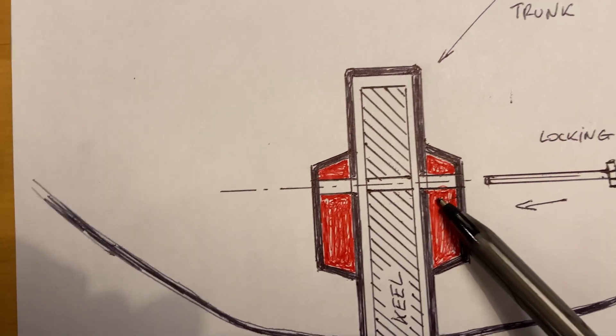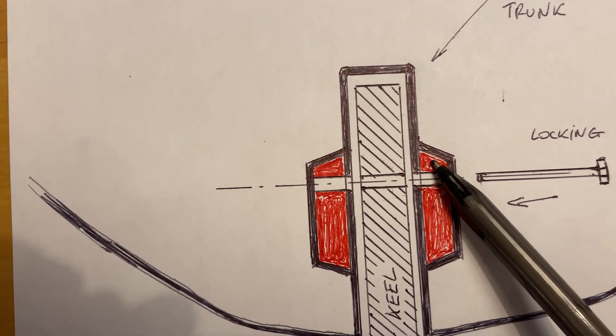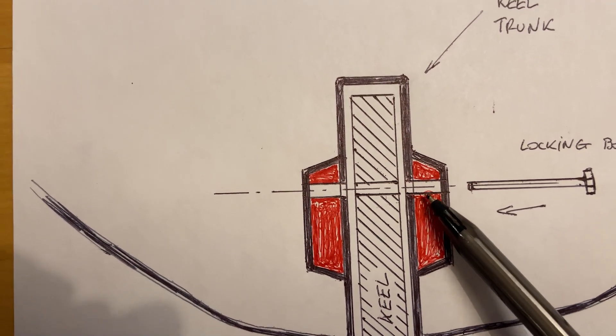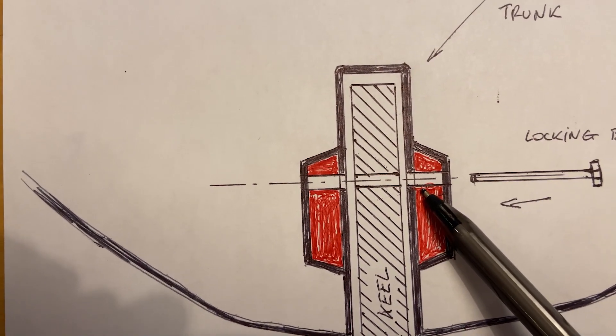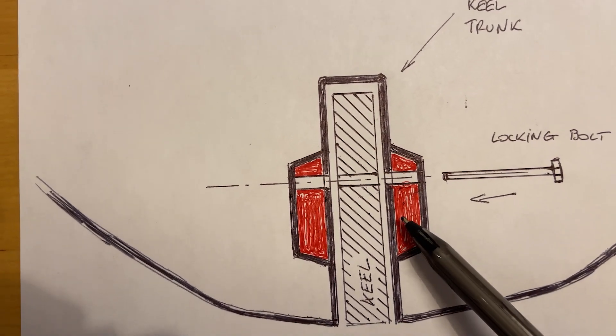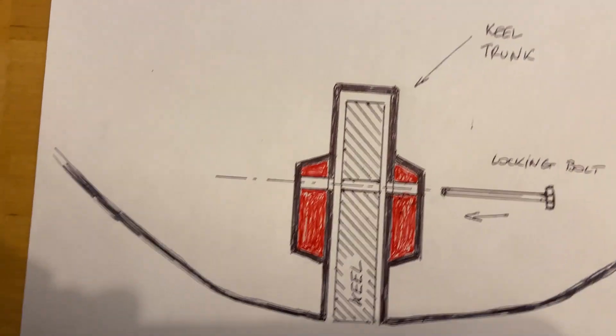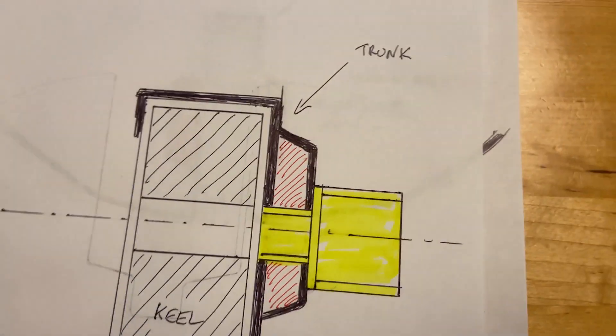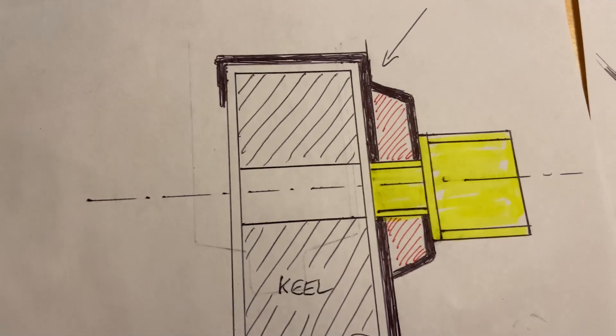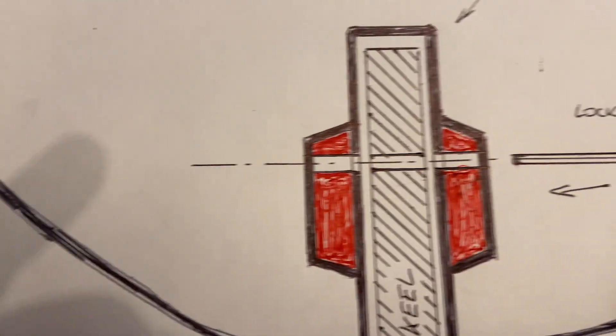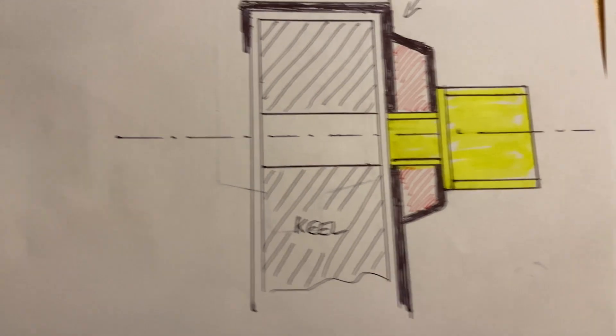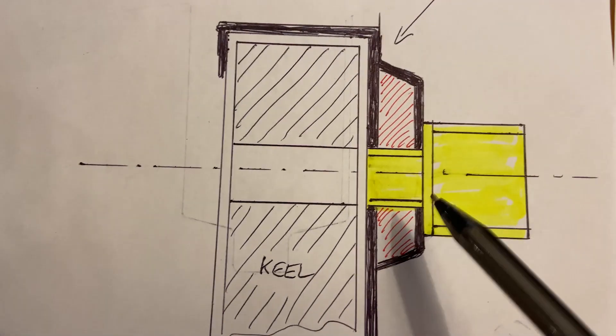Then you're going to weaken that part of the keel trunk that's supposed to be a reinforcement, and eventually it will weaken the whole assembly. With David's modification which I'm going to show you here, this is an enlarged version of one side of the keel.